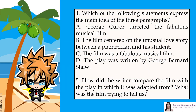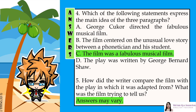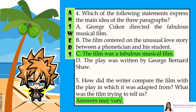Question 4: Which of the following statements expresses the main idea of the three paragraphs? A. George Cukor directed the fabulous musical film. B. The film centered on the unusual love story between a phonetician and his student. C. The film was a fabulous musical film. D. The play was written by George Bernard Shaw. Question 5: How did the writer compare the film with the play in which it was adapted from? What was the film trying to tell us? The answers are: 4. C — The film was a fabulous musical film. 5. Answers may vary.